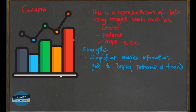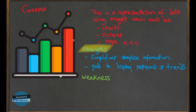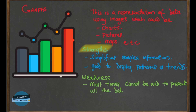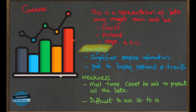Anytime you want to represent data in the form of a graph, the graph format that is best suited for the information must be chosen. The kind of graph you choose must be appropriate for the data type that you have. There are some weaknesses with graphs: one weakness is that you cannot use a graph to present all the data like in a table — you have to pick and choose the kind of data and information you want to show. Another weakness is that you cannot use a graph to represent different kinds of data or different units at the same time.